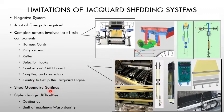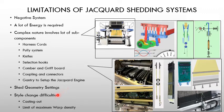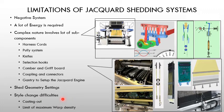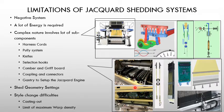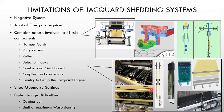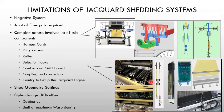We cannot perform geometry setting in as much detail as in a cam shedding system. Style changing costs time, and the density and number of hooks required, as well as the number of warp controls required, all add to the limitations of the current jacquard shedding system. The many components make the system very complex, which further limits the jacquard shedding system.